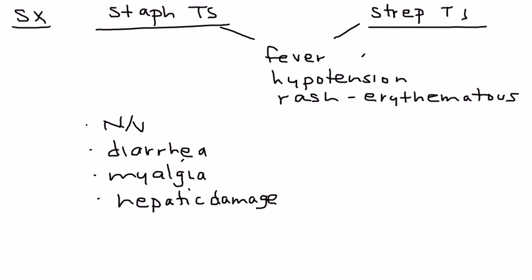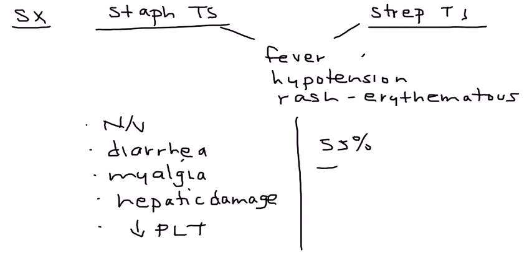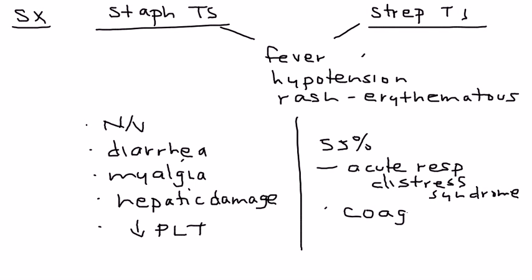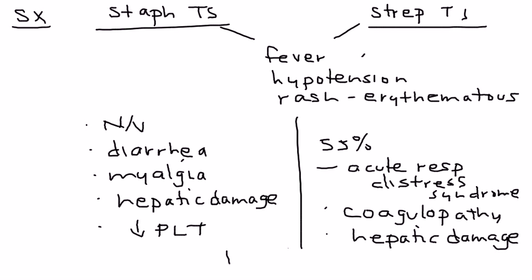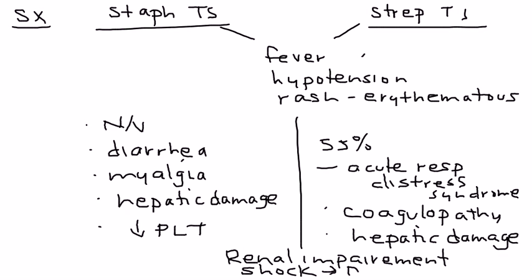In Staph Toxic Shock, the patient will also present with a low platelet count. In Strep Toxic Shock, about 55% of patients develop acute respiratory distress syndrome. Coagulopathy can also occur. Similar to Staph, liver damage is possible. Both conditions can cause kidney damage, and if severe enough, can lead to shock and death.